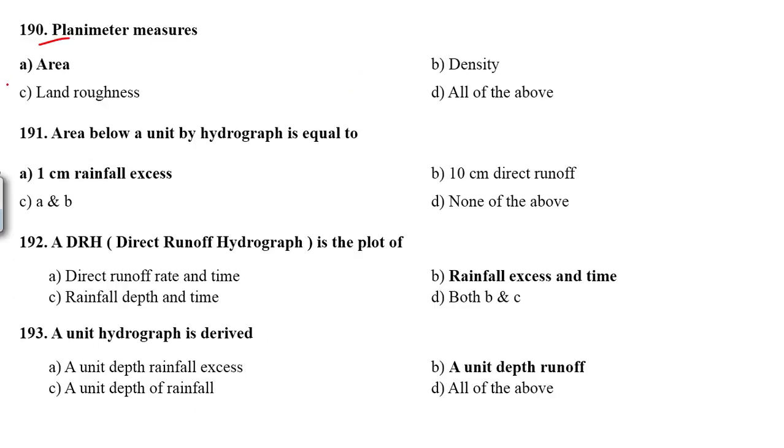Planimeter measures the area. Area below a unit hydrograph is called 1 cm rainfall excess. A DRH (direct runoff hydrograph) is a plot of rainfall excess and time.